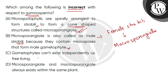Option C is about the gametophyte being free-living. This statement is correct. In bryophytes and in the case of the gametophyte in both groups, you will see that the gametophyte independently exists in a free-living form. This statement is correct with respect to gymnosperms.